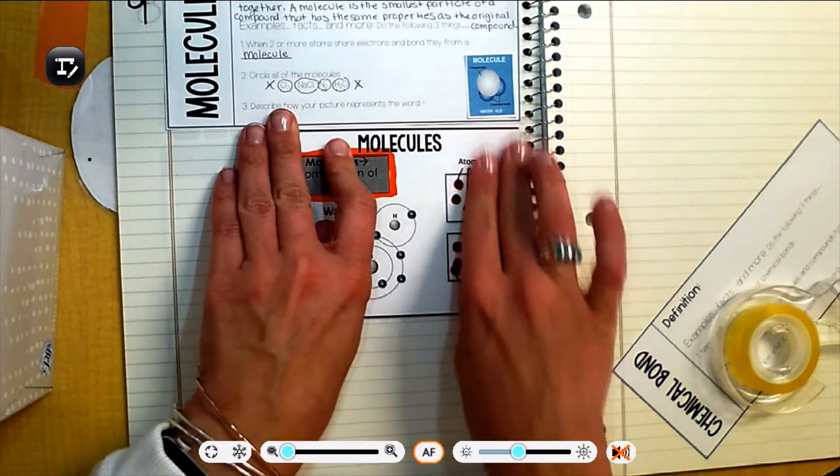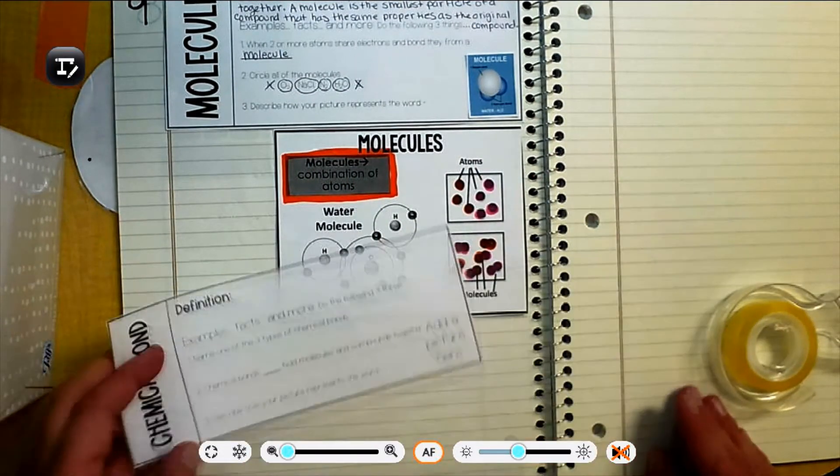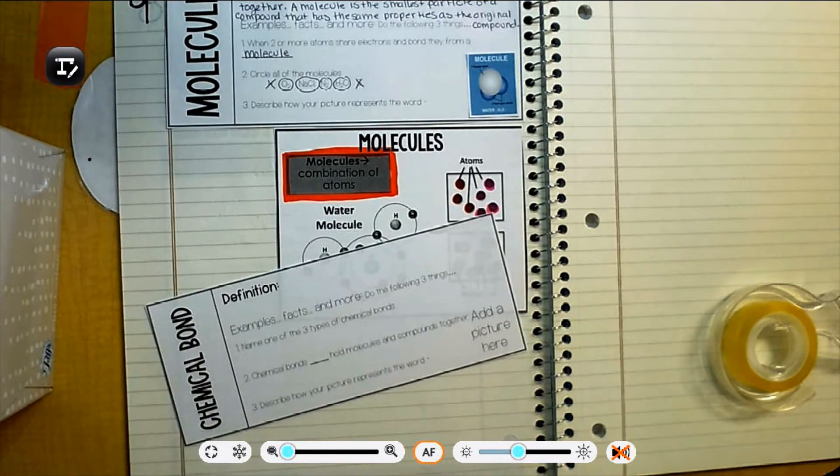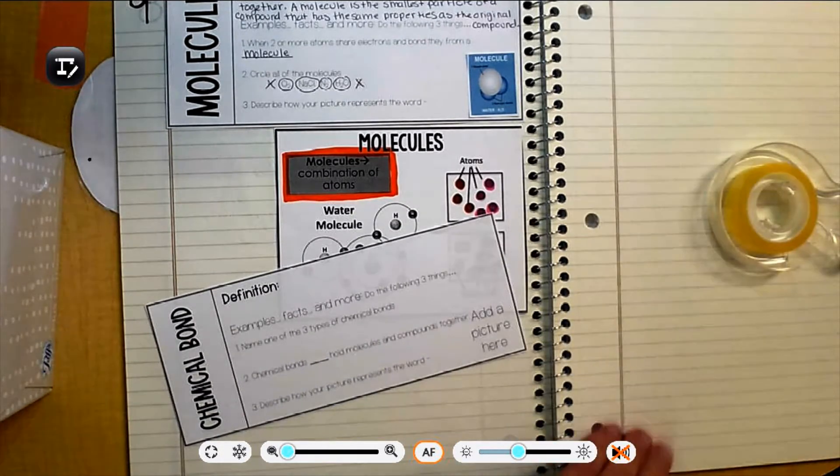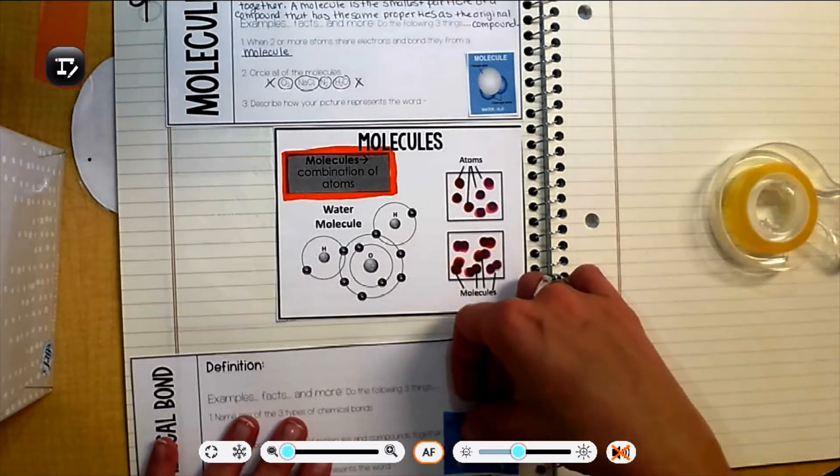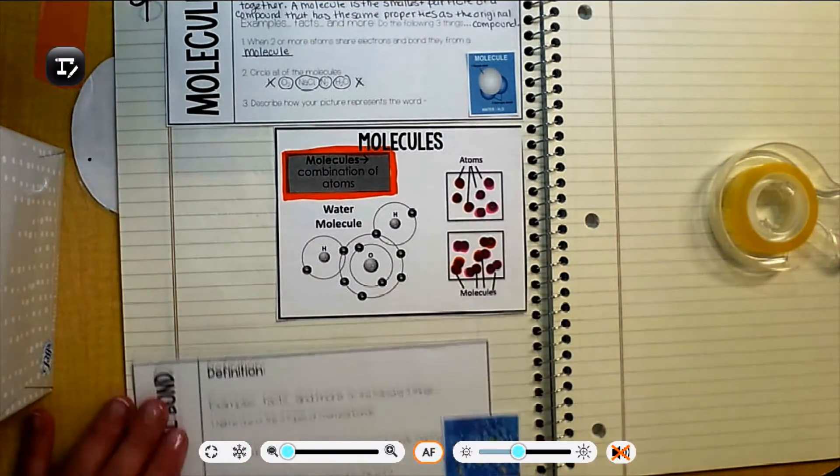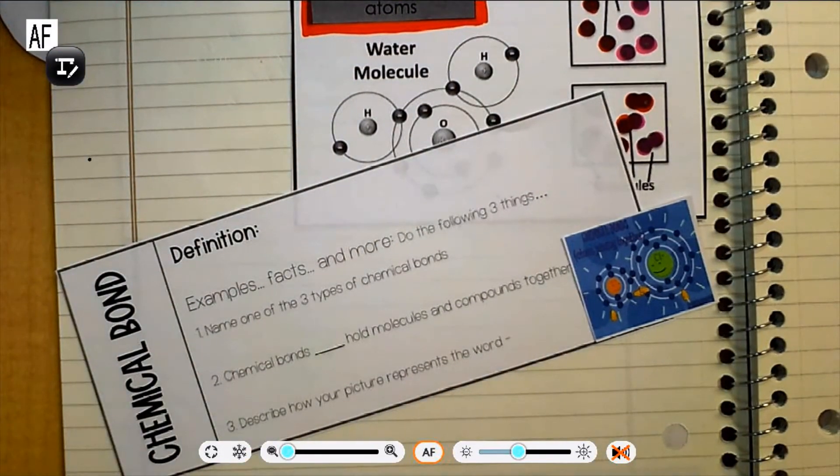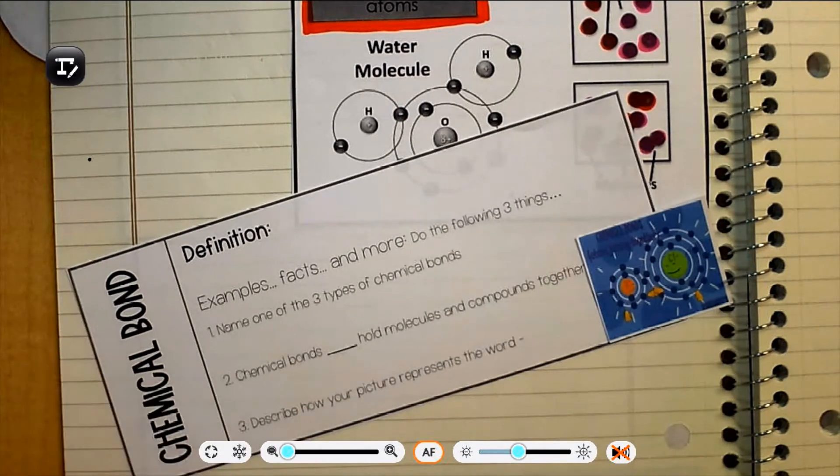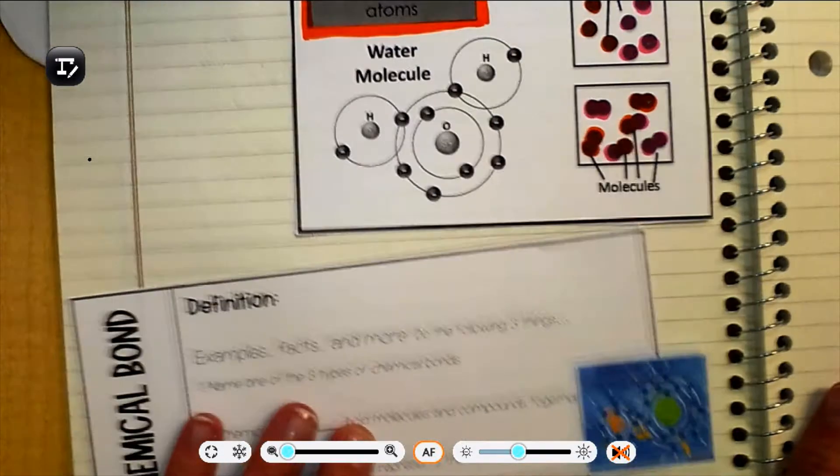And we're going to work on our definition of chemical bond. So make sure you have this definition and that picture right there. Okay, so chemical bond. Again, you can always find my definitions ahead of time on my super amazing one-of-a-kind science dictionary. My pictures are a little too big. Okay, now let's work on chemical bond. Zoom in. Focus. This one's not quite as long.